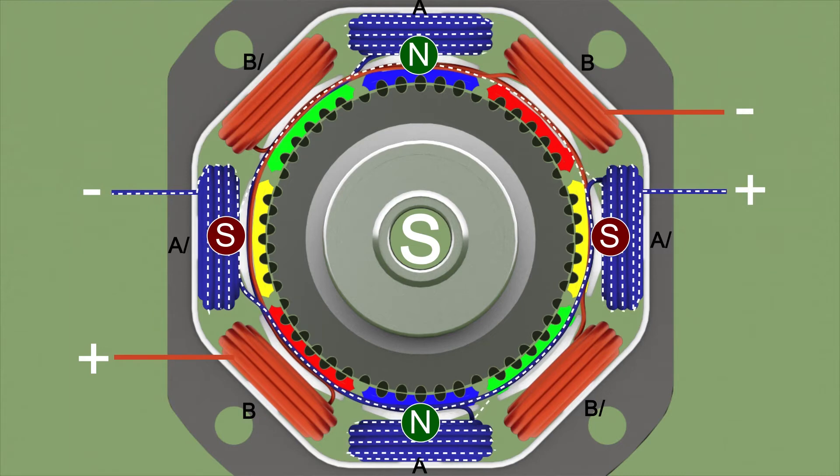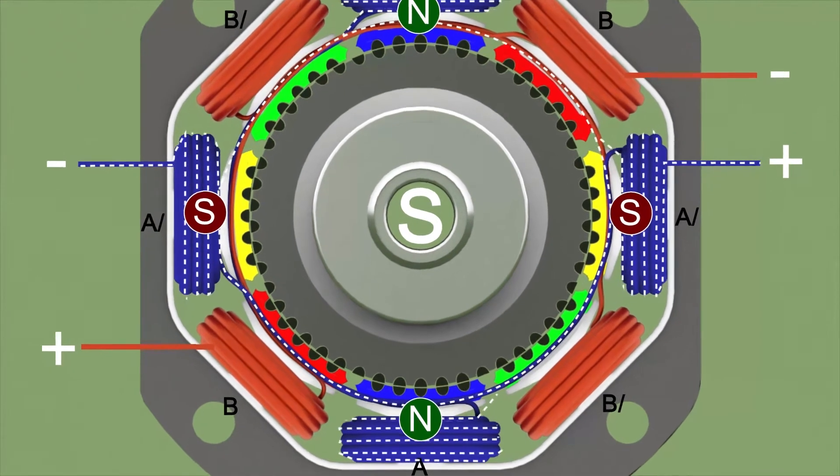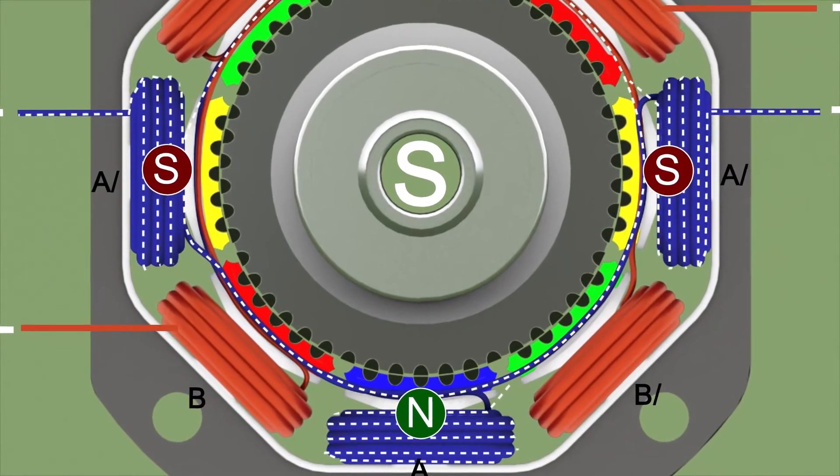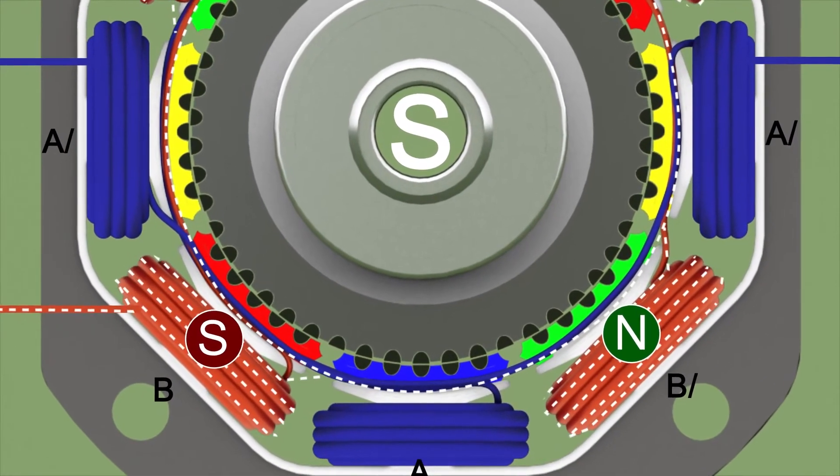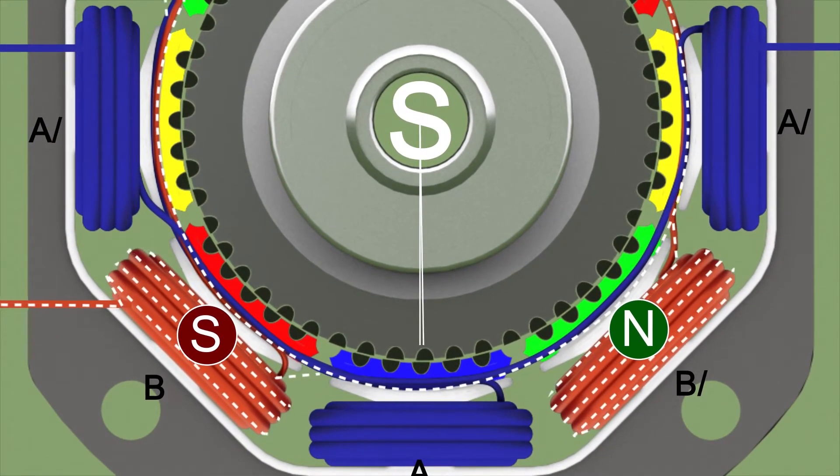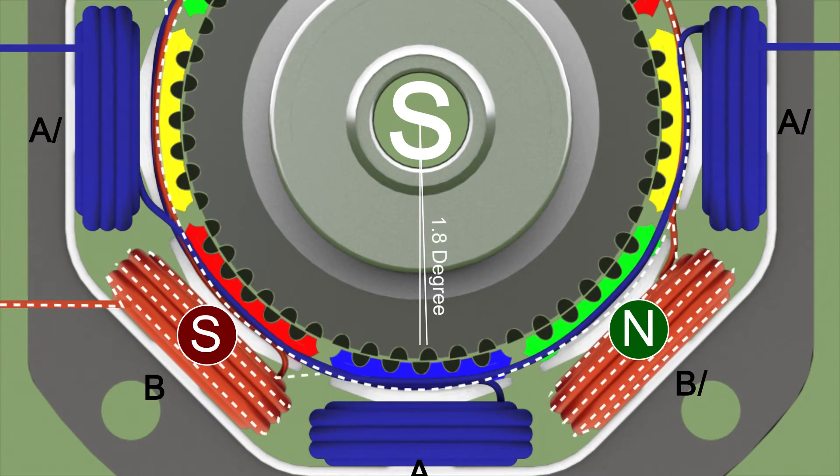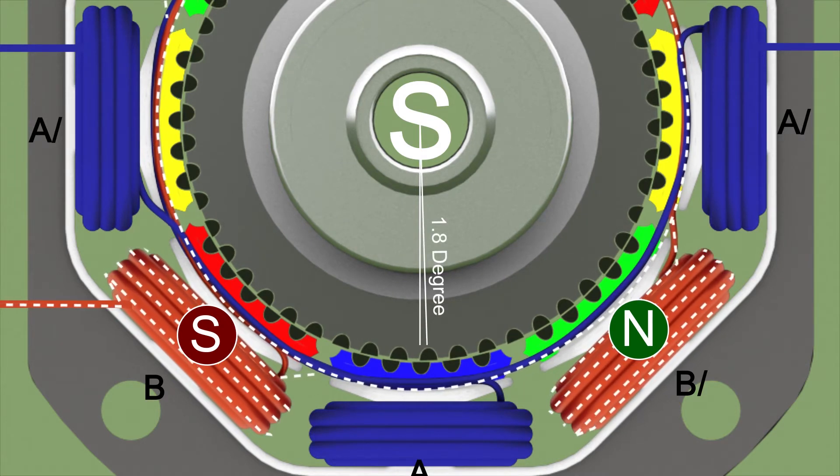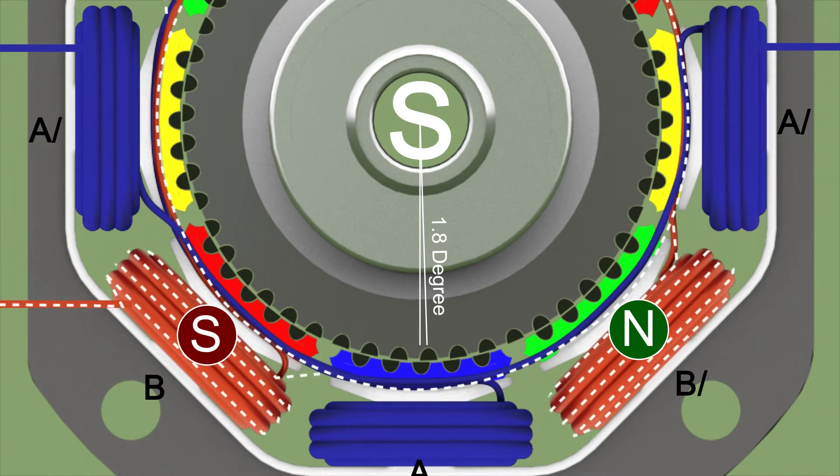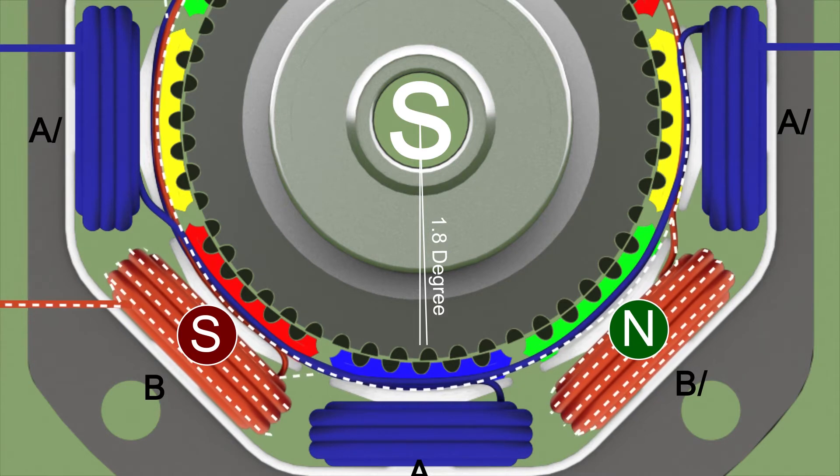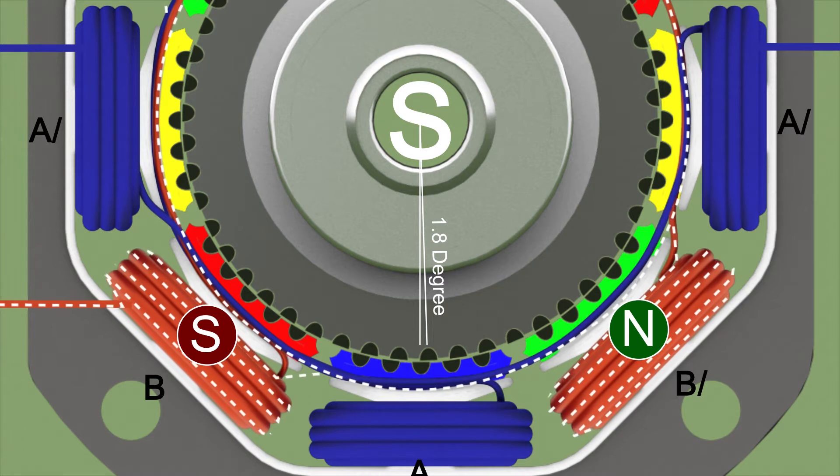And the same polarity poles are not aligned. When coil B is energized, you can see what happens to the rotor. The rotor is rotating by a small angle in order to align with the new north pole. It is clear that this angle is one quarter of the angular pitch. So, rotor is rotated by 1.8 degrees.